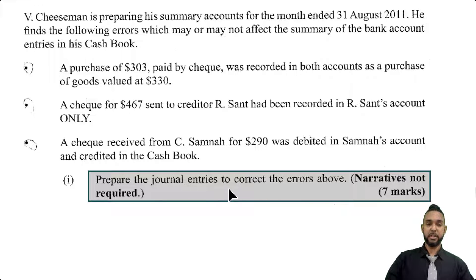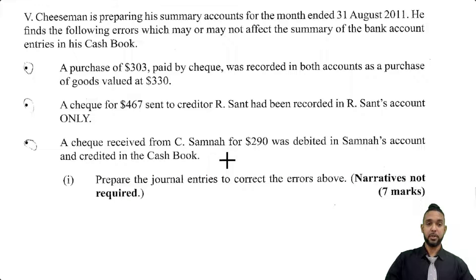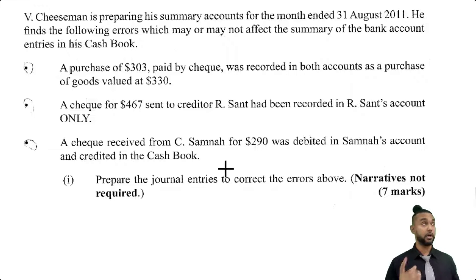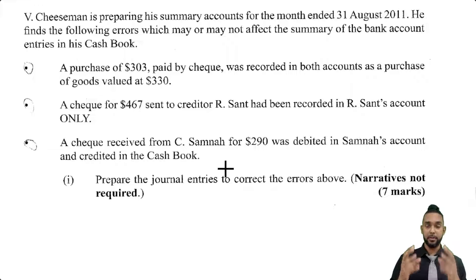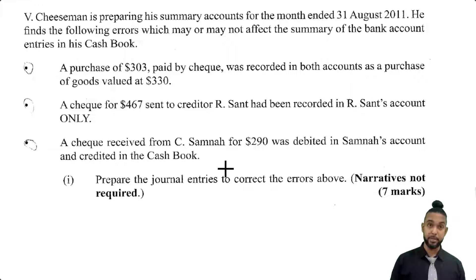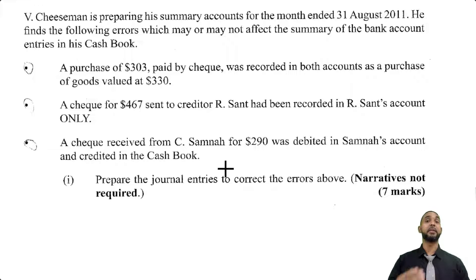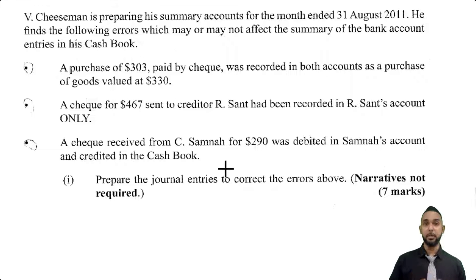It says: prepare the journal entries to correct the errors above. Narratives are not required — seven marks. Before we jump into correcting the errors, if you don't know anything about correcting errors, I'm going to put a card up there with a link to my errors playlist — you'll also find that link in the description below. If you do feel relatively comfortable with correcting errors, then let's proceed.